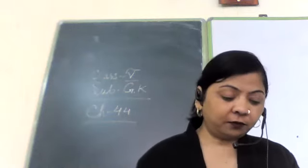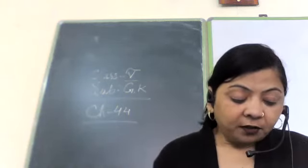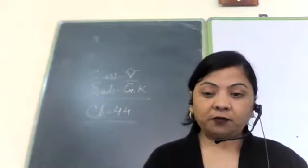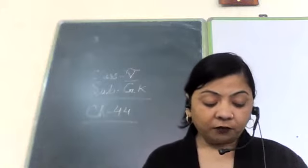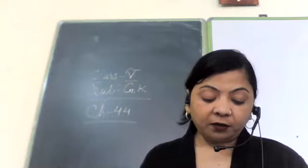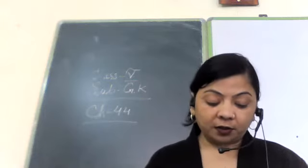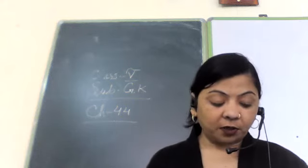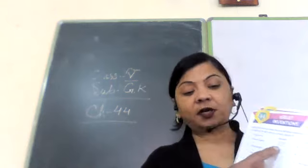Good morning class 5, today start chapter GK 44, Great Inventions. Match the inventors with their inventions. You have been given the name of inventors and the inventions. In column A they have given the inventions, and inventors who have invented them are given in column B. Match column A with column B.